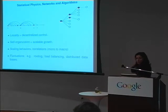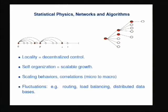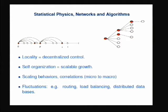When you look at that intersection and head toward the computer science end, you find networks. There are so many concepts that overlap between the two fields. In statistical physics, we're always trying to deal with locality — understanding what's going on locally in a system to predict large-scale behavior. We want things to be self-organized. In a network context, we want scalable growth — networks to grow indefinitely large without gaining additional overhead control. We look at scaling behaviors and how fluctuations affect physical models. In networks, we're very interested in how fluctuations relate to routing and load balancing.